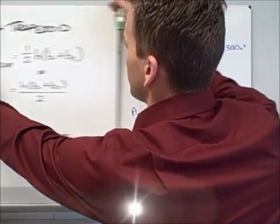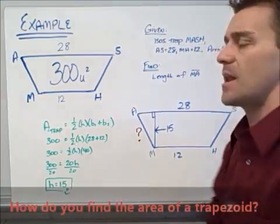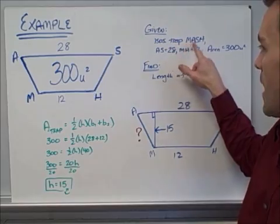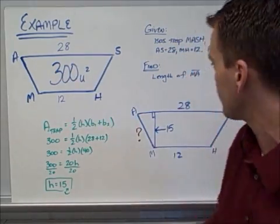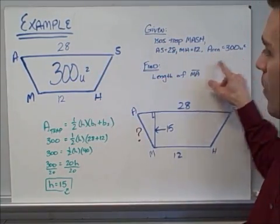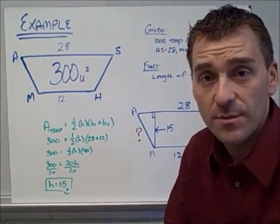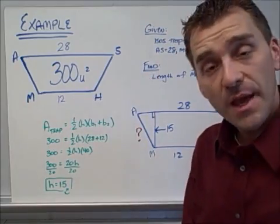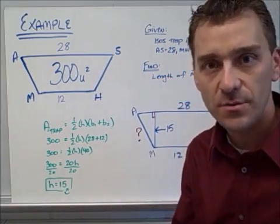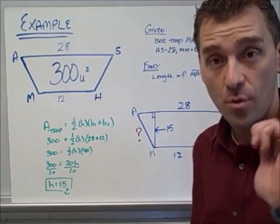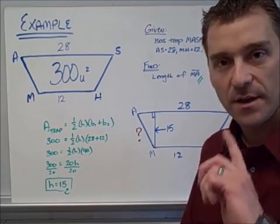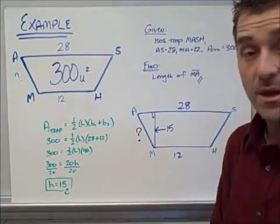Let's apply this to a more involved example. MASH is an isosceles trapezoid. AS equals 28 and MH equals 12 — those are the two bases. We're also given that the area of the trapezoid is 300 square units, meaning 300 little unit squares fit inside it. The question is asking us to find the length of MA — that slanted leg right there. Here's how it's done.